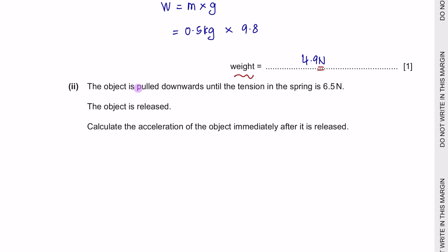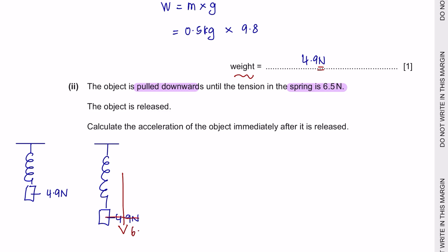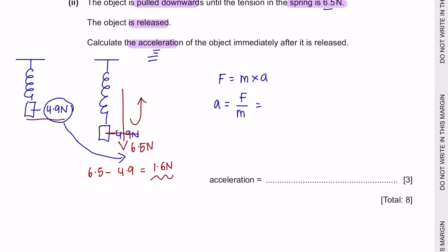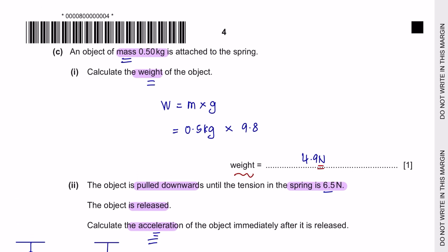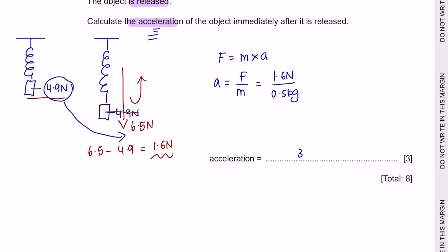Part 2: the object is pulled downwards until the tension of the spring becomes 6.5 N. Originally the spring has a load of 4.9 N, and it's being pulled until the tension becomes 6.5 N. Then the object is released, and we are asked to calculate the acceleration immediately when it's released — it's going to move back upwards. Using F = ma, rearranging for acceleration gives force over mass. The net force applied is 1.6 N and the mass is 0.5 kg, giving an acceleration of 3.2 m/s².